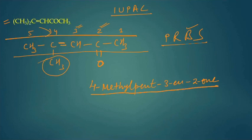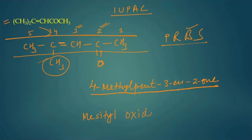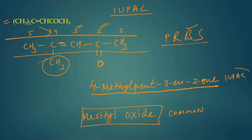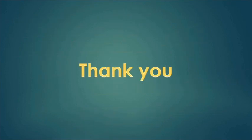Now try to write the common name of this compound. The common name is a special name you must memorize — it is mesityl oxide. So the common name is mesityl oxide and the IUPAC name is 4-methylpent-3-en-2-one. I hope this video is useful for you. Thanks for watching. Have a nice day.